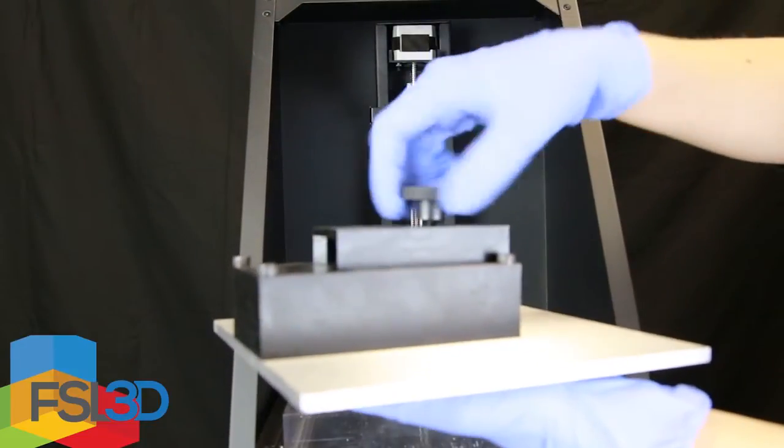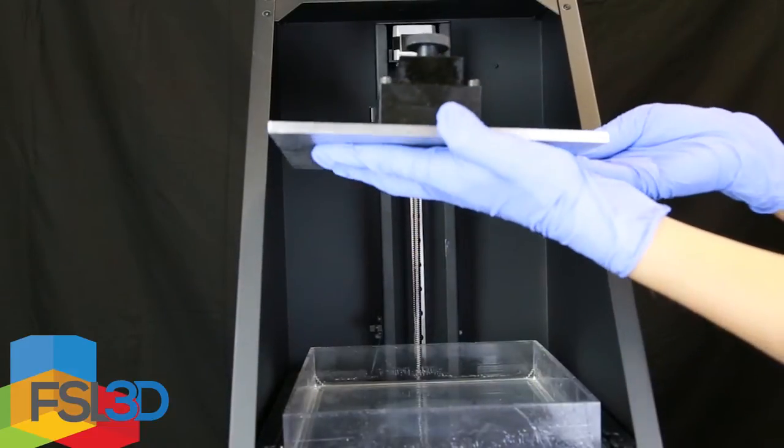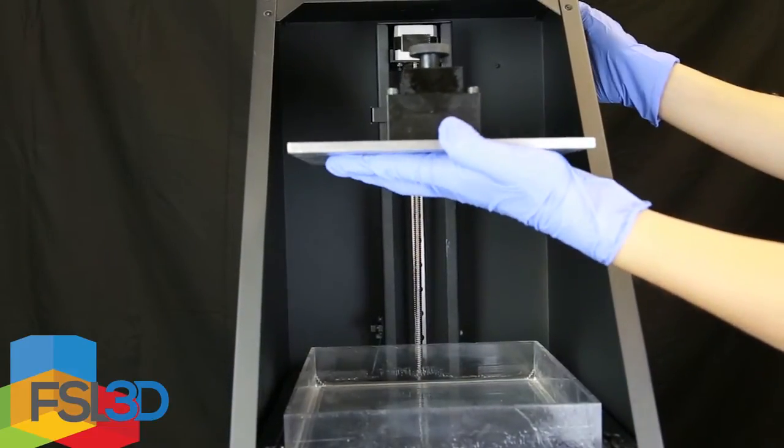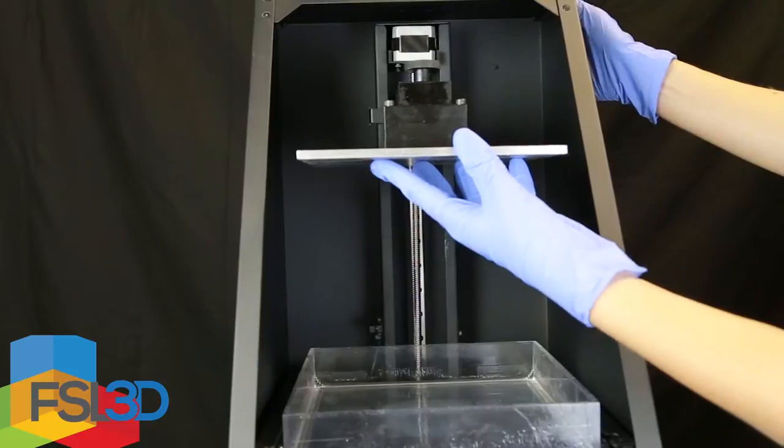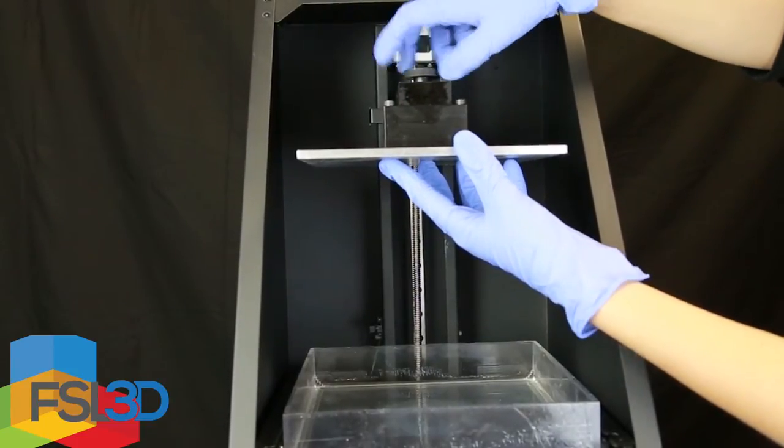Next you must attach the build plate. Loosen the screw to ensure the head moves all the way back on the printer. Once in place, tighten the screw ensuring it's secure. There is no need to over tighten as you will be removing the build head regularly to remove your prints.